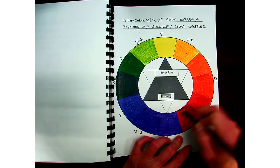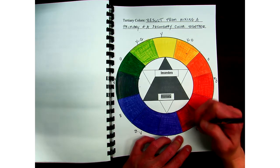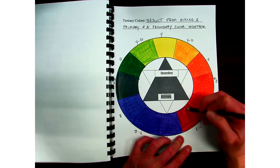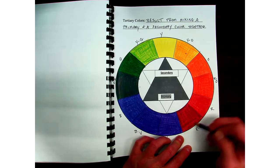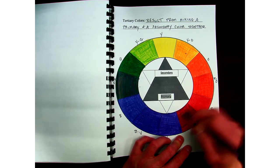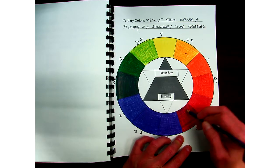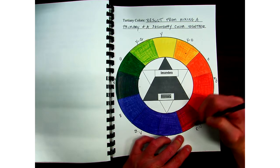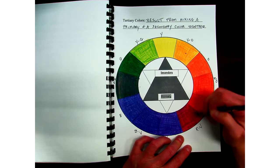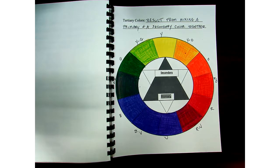Now for your page that you did yesterday, you were trying to mix the secondary colors. So if you're working on that page today, you cannot use the secondary colors orange, violet, and green for those today. You can only use the secondary colors for the color wheel because we already know how to mix those. We've already experimented with that. All right.